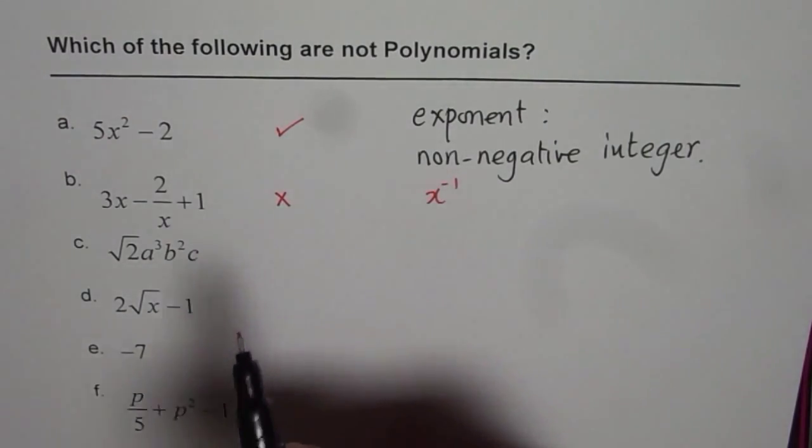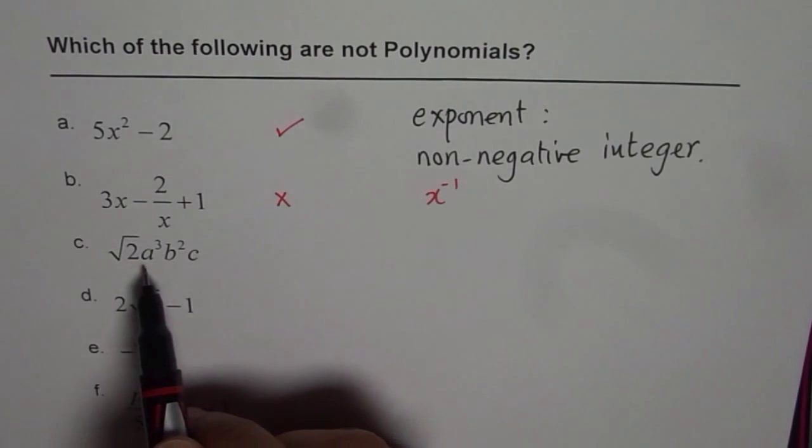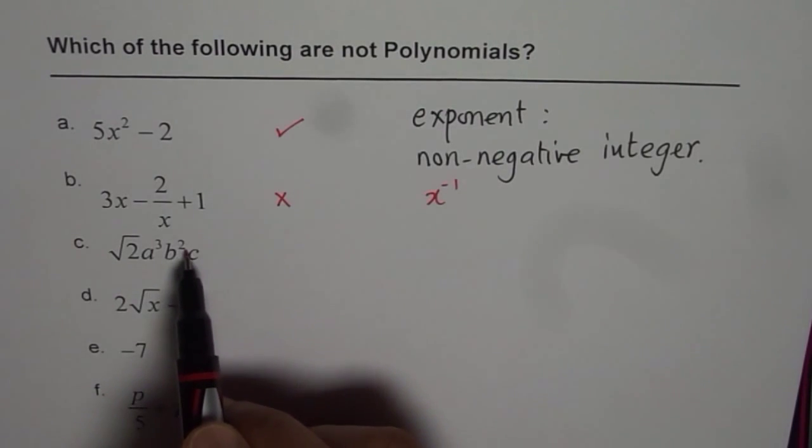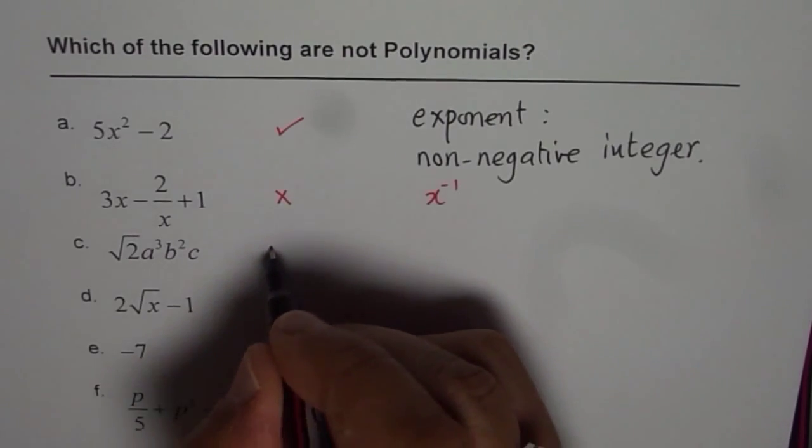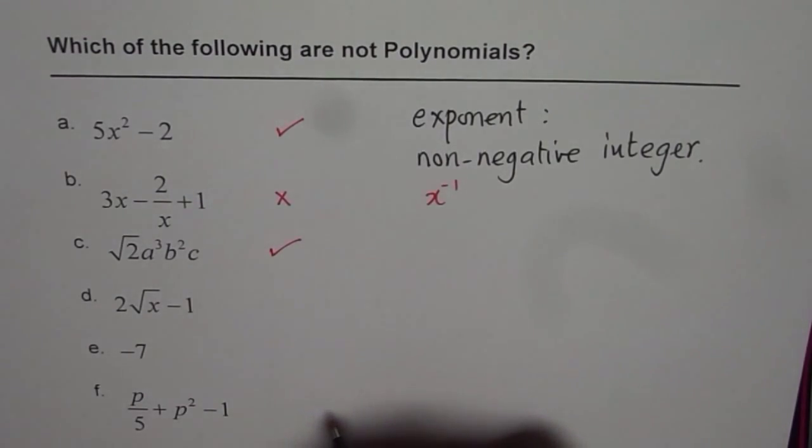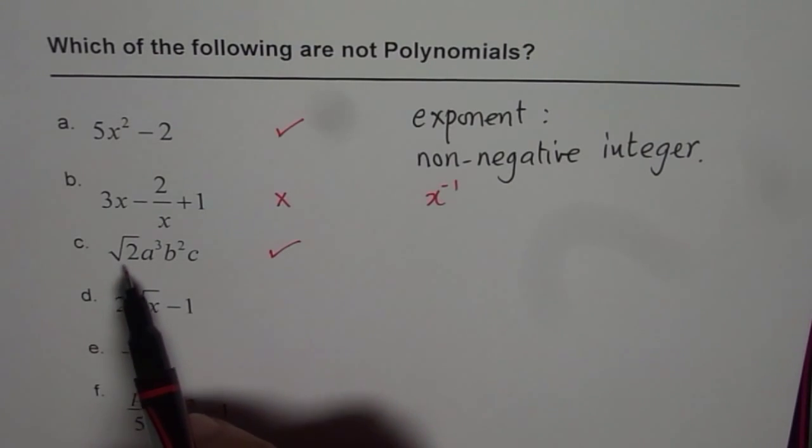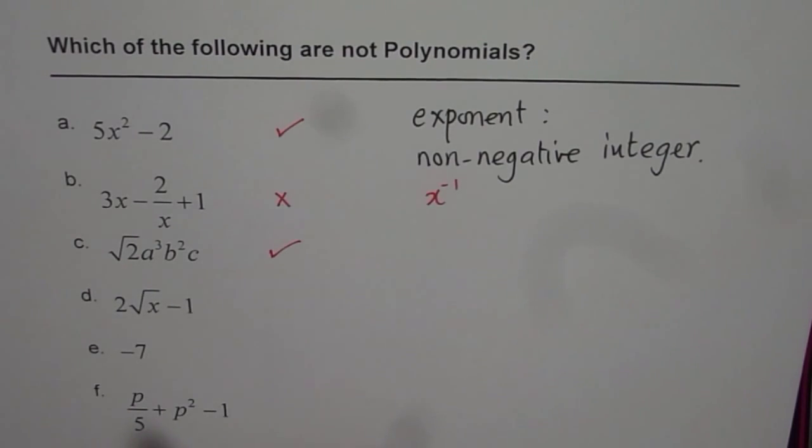Exponent should be non-negative. In part c, exponent for the variables are all whole numbers. So, these are representative of the terms in a polynomial. Square root 2, that is the coefficient and that could be any real number.